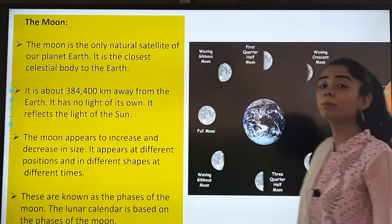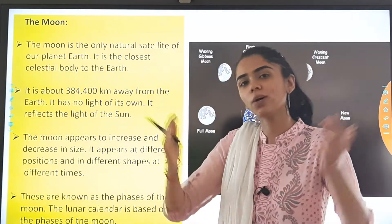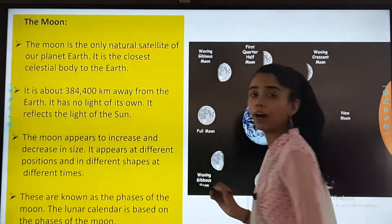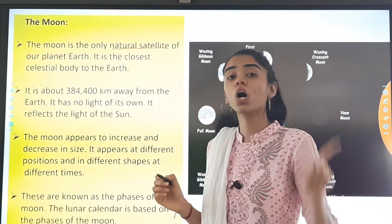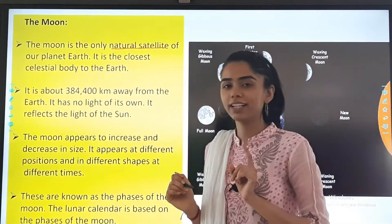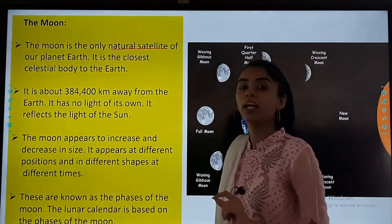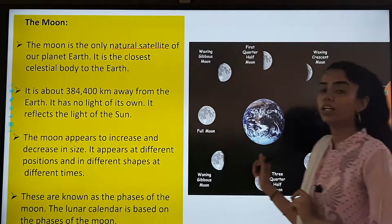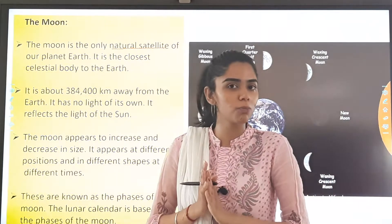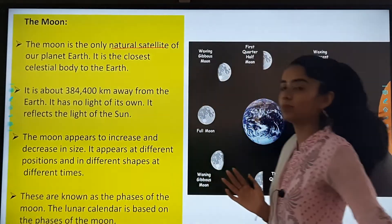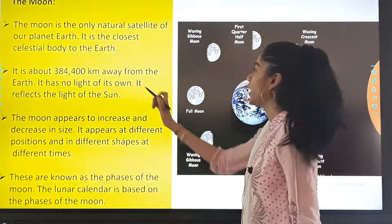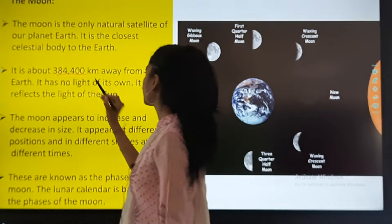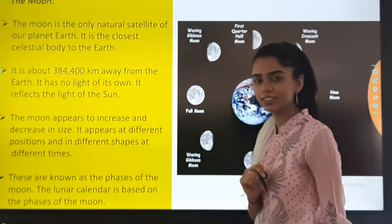Now let us talk about the moon. Moon is the only natural satellite of our planet Earth. It is the closest celestial body to the Earth, about 3,84,400 kilometers away from the Earth.